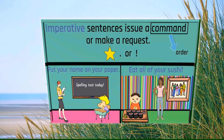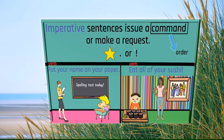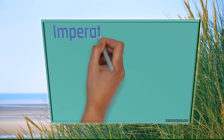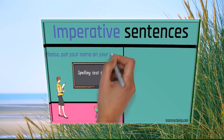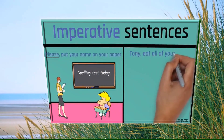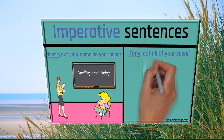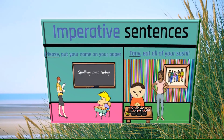Imperative sentences are different because many of them appear to start with a verb or seem to be missing their subjects. But since imperative sentences are speaking directly to a person or a group of people, there is an implied 'you' that isn't actually written but is understood — 'You put your name on your paper,' 'You eat all of your sushi.' Sometimes they have extra words like 'Please put your name on your paper' or 'Tony, eat all of your sushi.' But don't let the extra words fool you — if it's a command, it's an imperative sentence.